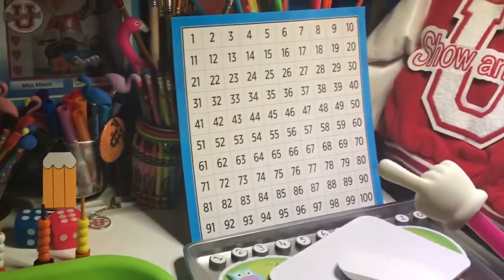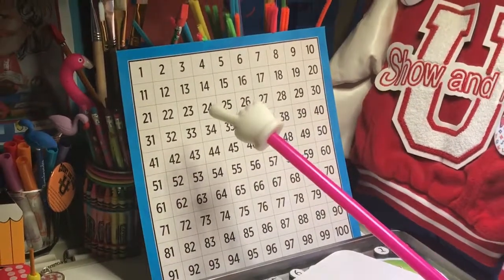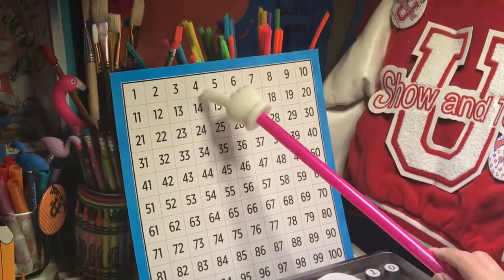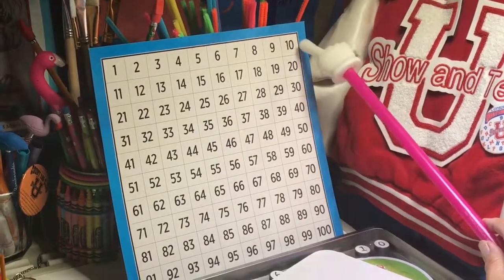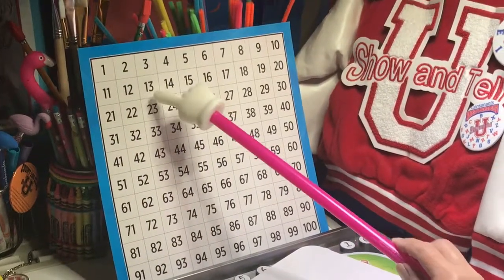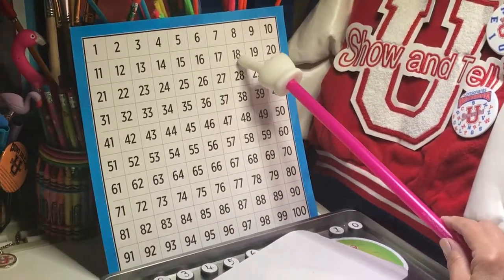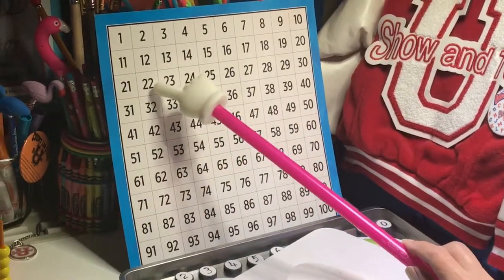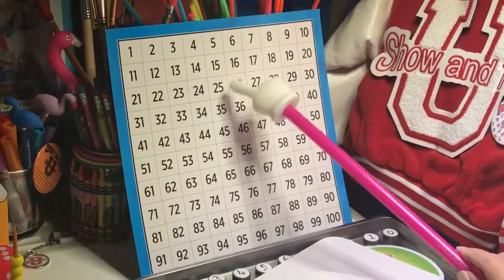First of all today, little scholars, let's start by counting from 1 to 25 by 1s. Are you ready? Here we go. 1, 2, 3, 4, 5, 6, 7, 8, 9, 10, 11, 12, 13, 14, 15, 16, 17, 18, 19, 20, 21, 22, 23, 24, 25. Congratulations!